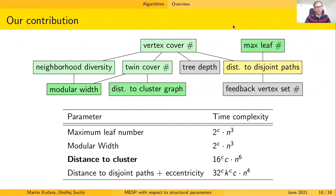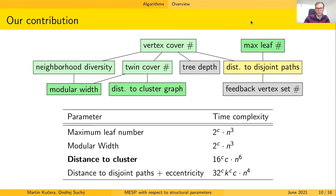Since we do not expect an algorithm parameterized by the eccentricity itself, we consider algorithms parameterized by other structural parameters. The diagram in the slides gives an overview: whenever two parameters are connected by an edge, an FPT algorithm for the lower one implies one for the upper. In our paper, we present FPT algorithms parameterized by maximum leaf number, modular width, and distance to cluster, which also implies FPT algorithms for neighborhood diversity, twin-cover, and vertex cover. We also present an FPT algorithm parameterized by distance to disjoint paths combined with the desired eccentricity.